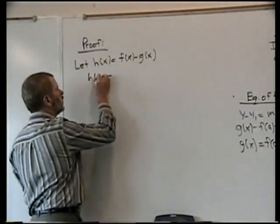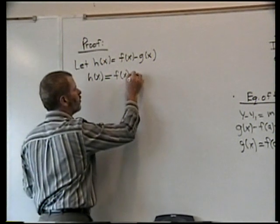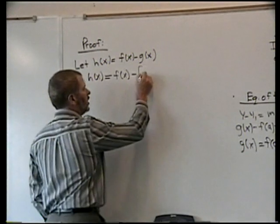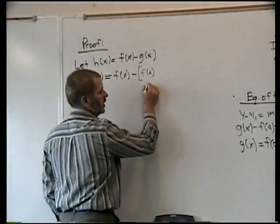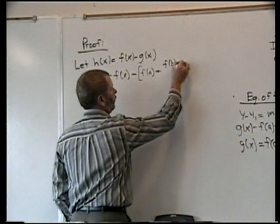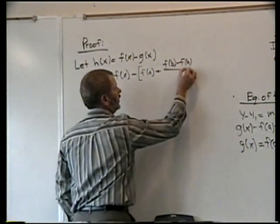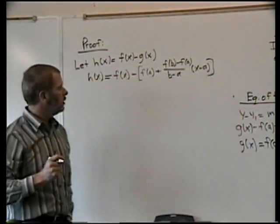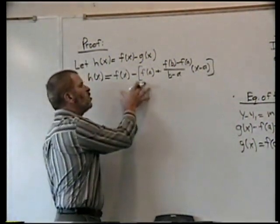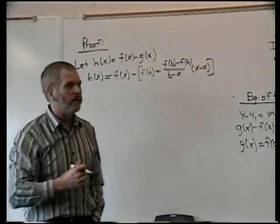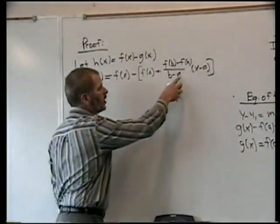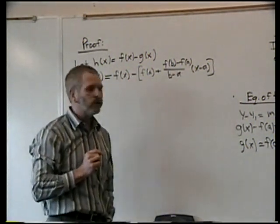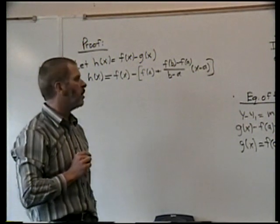The form we're really going to want is we'll bring the other form of g(x), our secant line equation, and put it in here in place of g. That does two things: we no longer have the g function; we have only our f function. And we also have the slope relationship that we're ultimately looking for in the results of the mean value theorem.